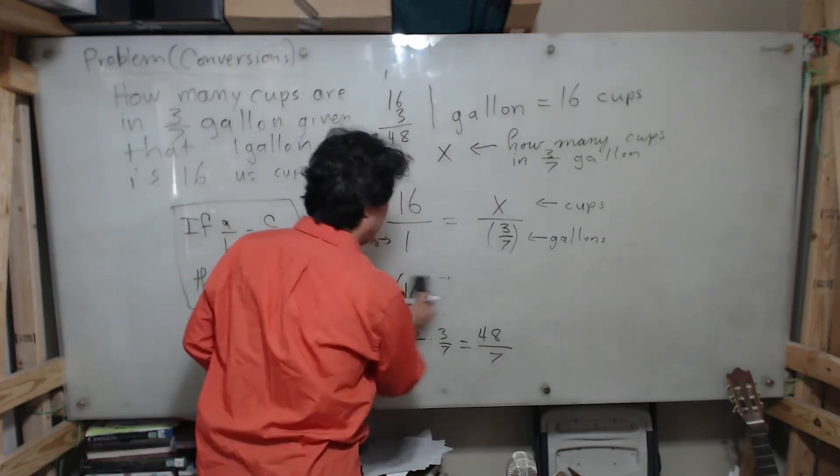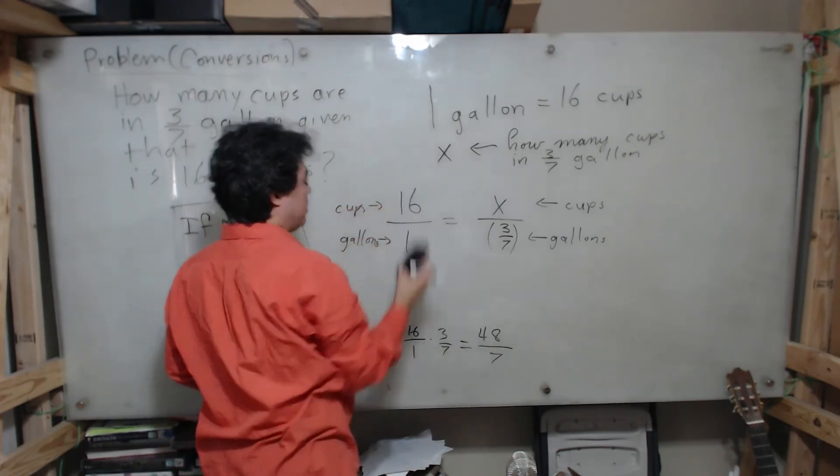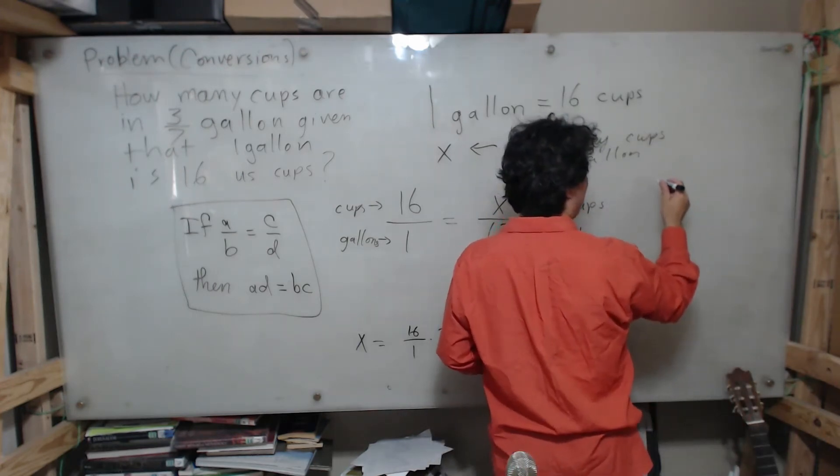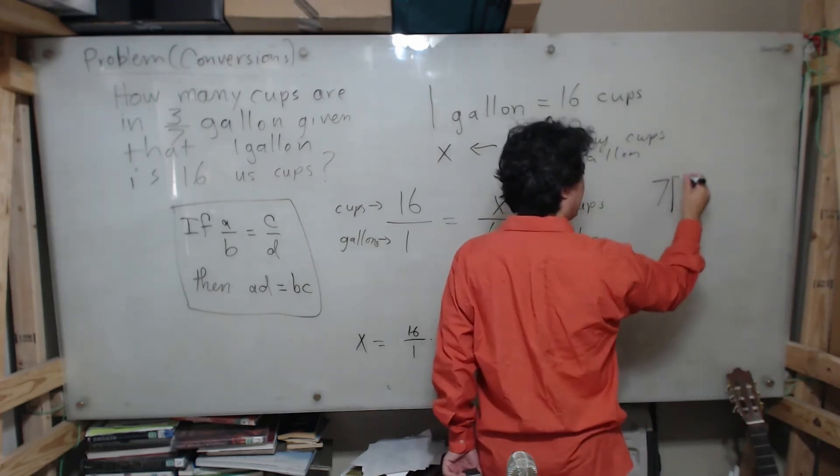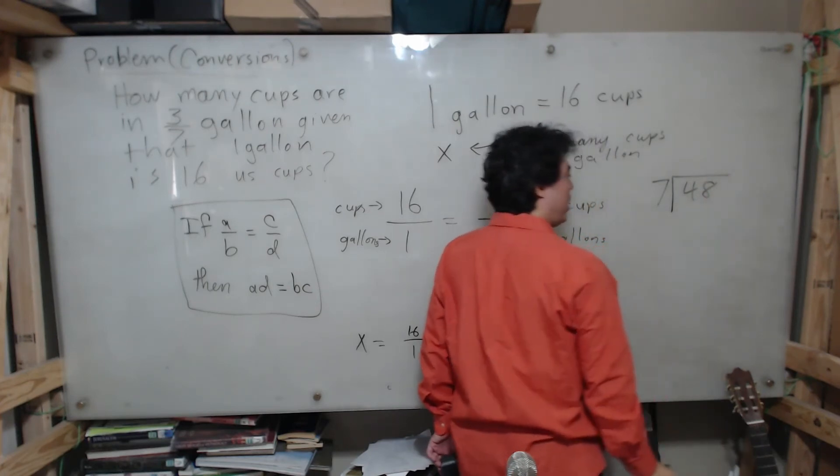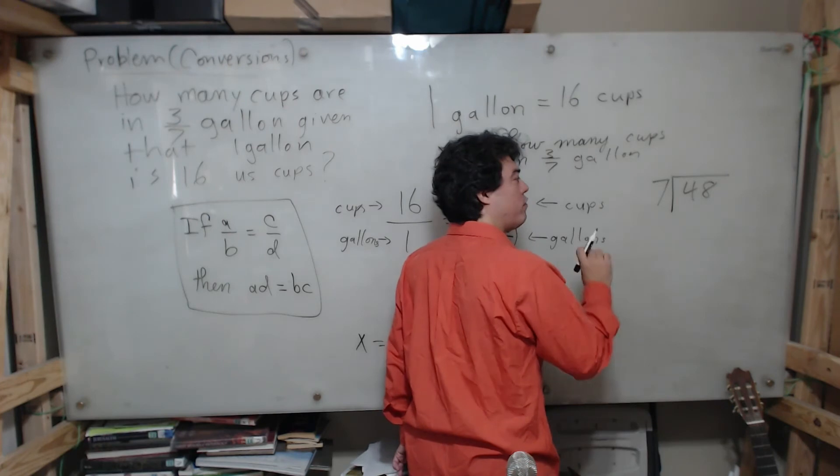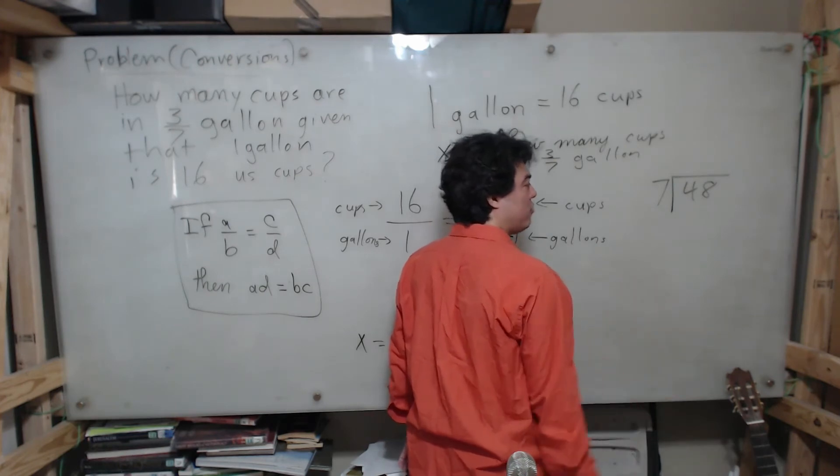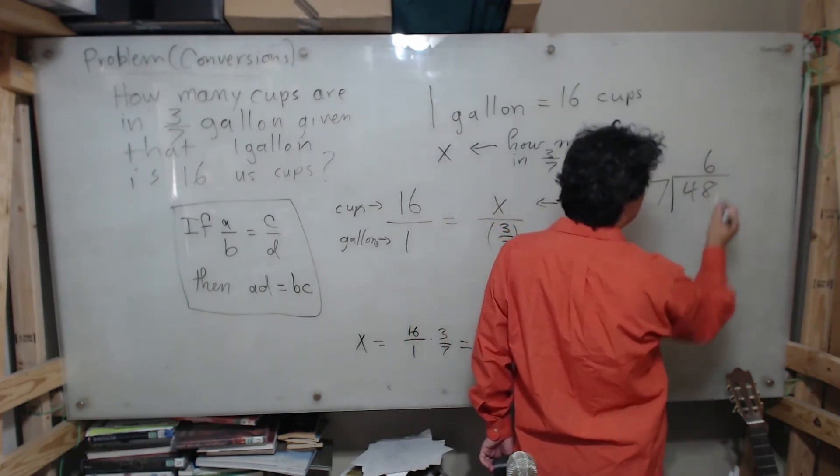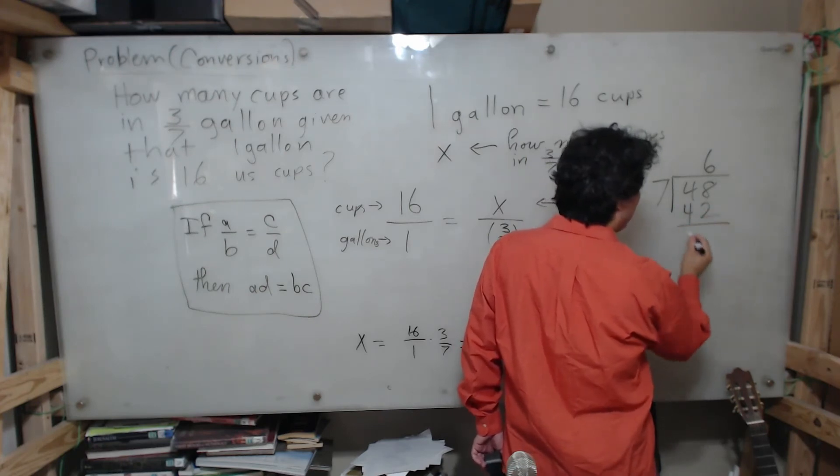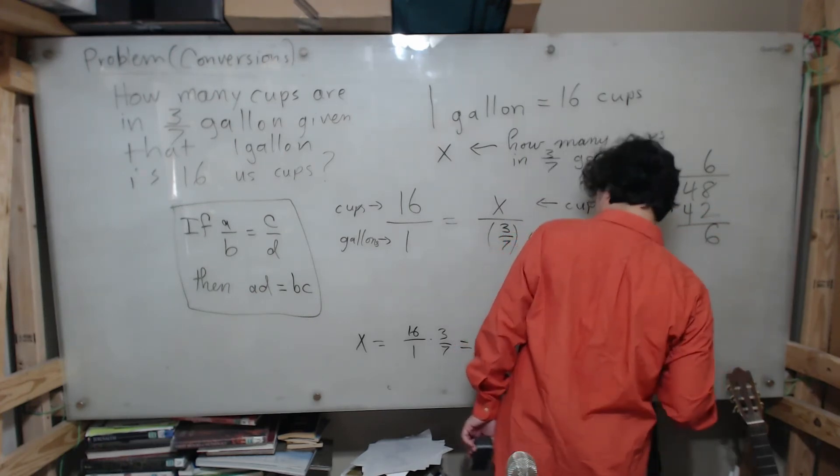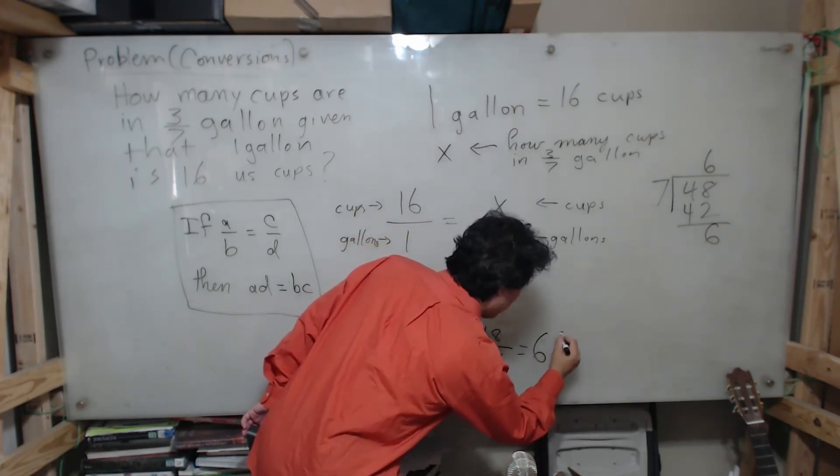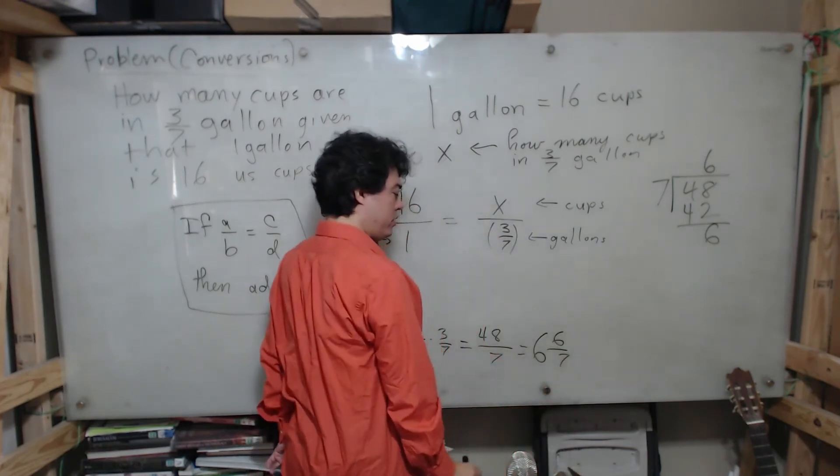But of course we don't expect cups like that, we expect cups to be in some other form. We know 48 divided by 7 is the same thing as if we take 7 on the outside and 48 on the inside. What is the largest number of times 7 goes into 48 without going over? We know that 7 times 6 is 42, 7 times 7 is 49, so it must be 6. 6 times 7 is 42, 48 minus 42 is a remainder of 6. So I can rewrite this as 6 and 6 over 7 cups.